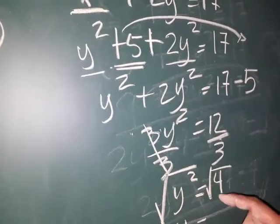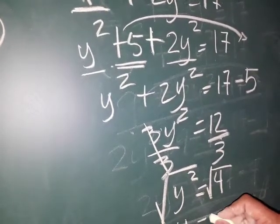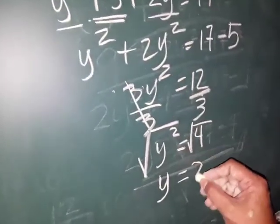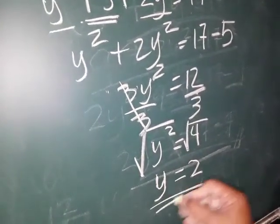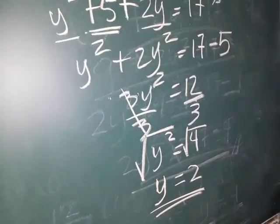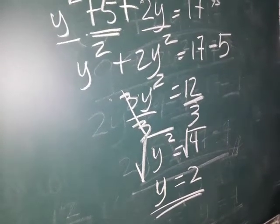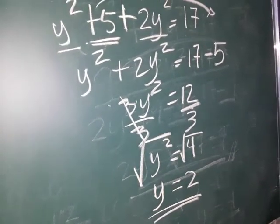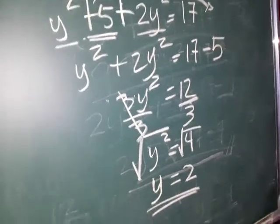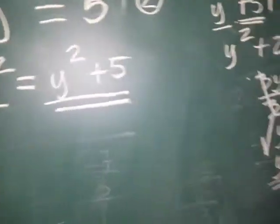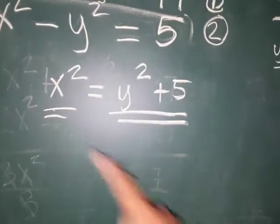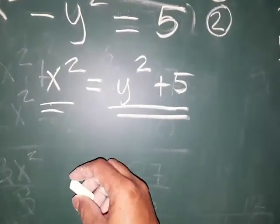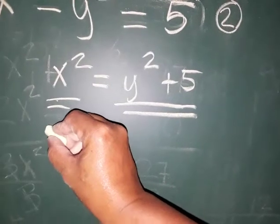Take the square root of both sides to remove the exponent. So y is equal to the square root of 4, which is 2 because 2 times 2 equals 4. So y is 2. The same as our elimination result. Now how do we get x? If y is 2, then substitute y equals 2 to get x.